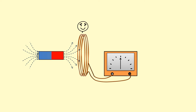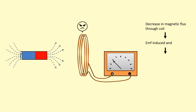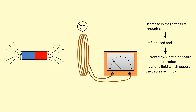Watch what happens when I move the magnet away — the coil doesn't like the decrease in flux, so it's going to induce an EMF again, but this time in the opposite direction. So the current is going to flow in the opposite direction, and it's going to produce a magnetic field in the opposite direction to before, trying to oppose the decrease in flux. Before it was opposing an increase; now it's opposing a decrease — it just doesn't like change.